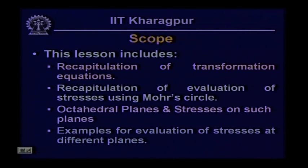The scope of this particular lesson includes the recapitulation of transformation equations derived in the last lesson, recapitulation of evaluation of stresses using Mohr's circle. We will look into some aspects of octahedral stresses, define the octahedral plane and stresses acting on such planes, and then look into examples of how to evaluate stresses at a particular point on a stressed body.